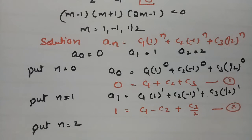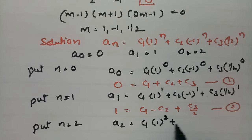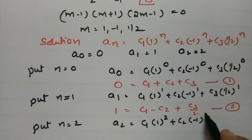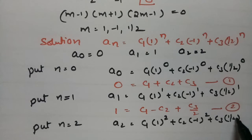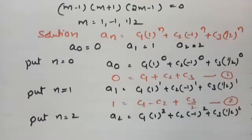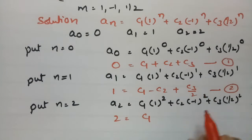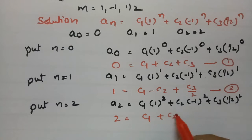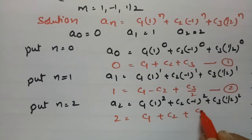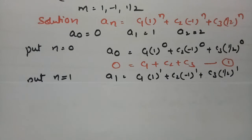Putting n = 2: a₂ = c₁(1)² + c₂(-1)² + c₃(1/2)² = 2, which gives c₁ + c₂ + c₃/4 = 2 — this is equation 3. Now we have to solve equations 1, 2, and 3 to find the values of c₁, c₂, and c₃.